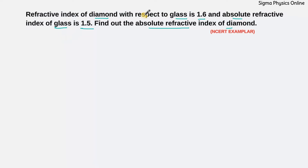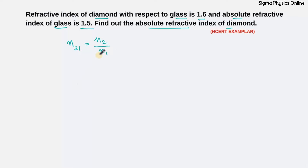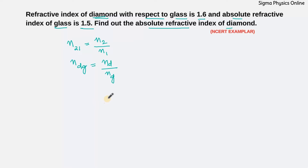The refractive index of diamond with respect to glass — how do we write the refractive index of one medium with respect to another? The refractive index of the second medium with respect to the first medium is written as the refractive index of the second medium divided by the refractive index of the first medium. So here, the refractive index of diamond with respect to glass is written as the refractive index of diamond divided by the refractive index of glass.